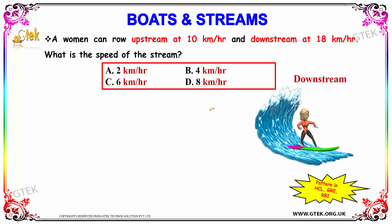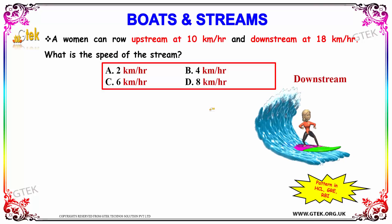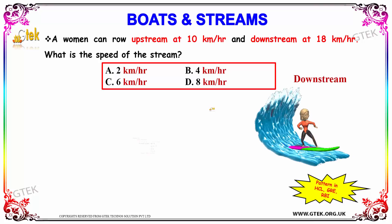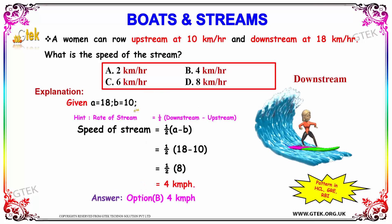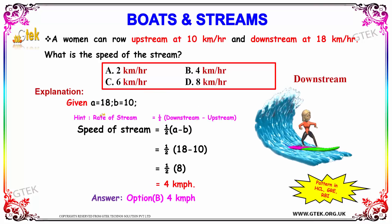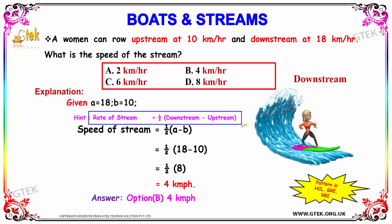How can we solve this? The speed of the stream can be obtained using the formula: half into downstream minus upstream.